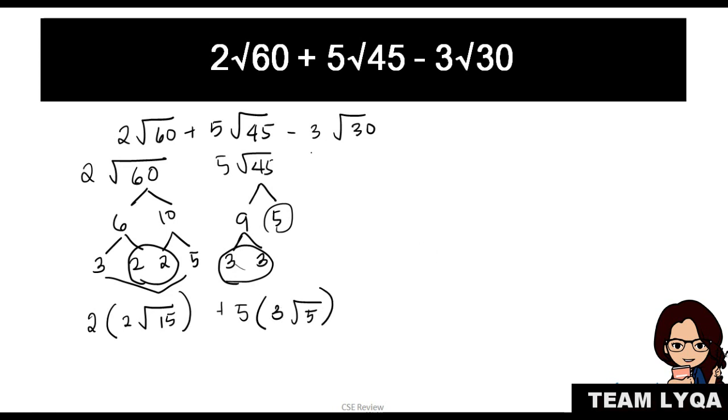And then the next one, we have negative 3 square root of 30. The 30, we can also separate. It can be made into 6 times 5. And then this would be 3 times 2. And when you look at it, is there anything else you can do? Nothing. Right? So that means it has no pairs. That means you can't do anything with it. The answer would still be negative 3 square root of 30. So this would be 4 square root of 15 plus 15 square root of 5 minus 3 square root of 30.